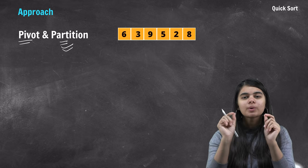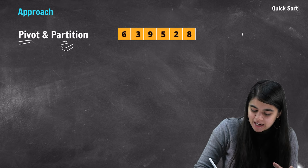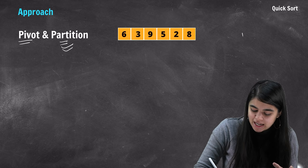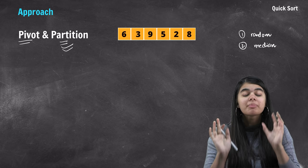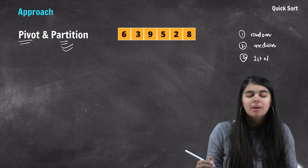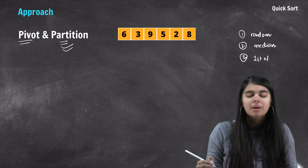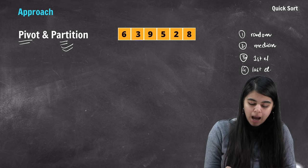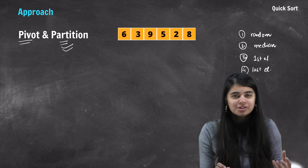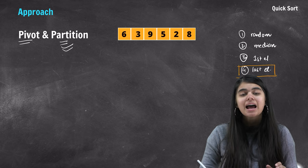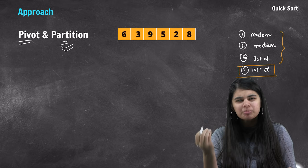Pivot is not chosen in just one way — there are many ways. The first way is to choose a random element. The second way is to choose the median. The third way is to choose the first element as our pivot. The fourth way is to choose the last element of the array as our pivot. Most quicksort implementations use this fourth approach — where the last element is chosen as pivot.